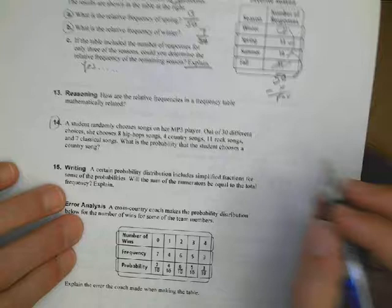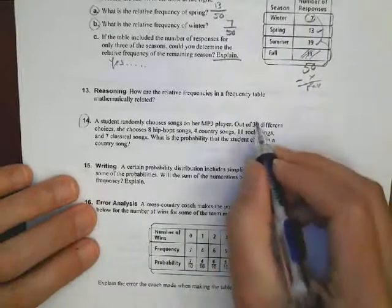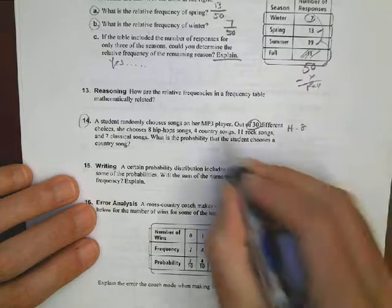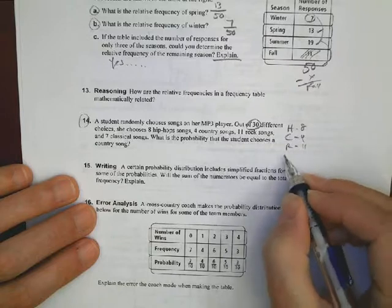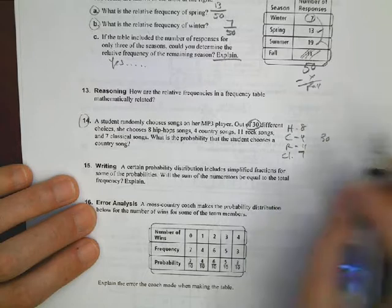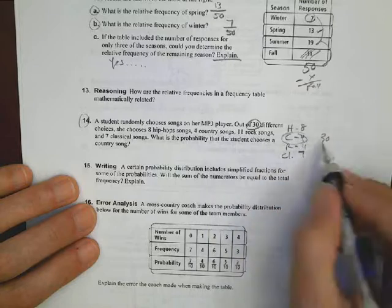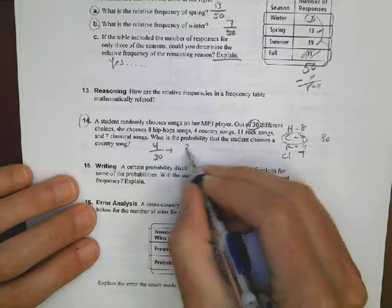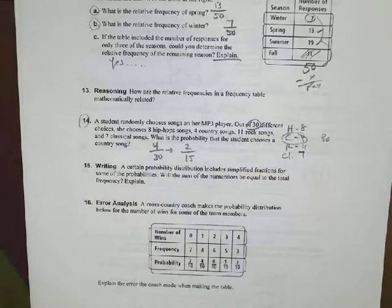One last one here. We have number 14. We have out of 30 different choices, so that's our bottom number denominator. She chooses, we have hip-hop is 8, we have country is 4, we have rock is 11, and we have classical is 7 songs, and she has 30 different choices there. What's the problem if she chooses a country song? Well, country was 4, and it's 4 out of 30, but I know those are two even numbers, so I can reduce that, cut them in half, and I get 2 out of 15. Hope that helps a little bit, and good luck on the rest of the problems.